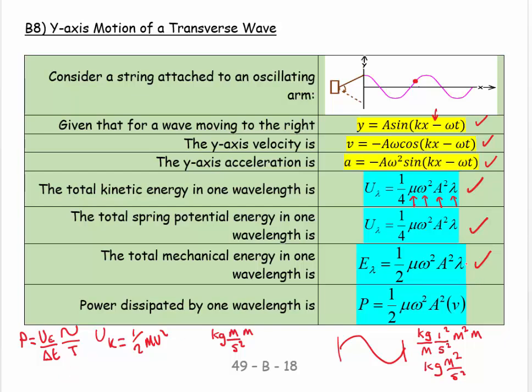So then that means that I get λ over T, meaning period, and λ over T is the velocity. So that gives you an insight. The faster that the wave is going, the more power is dissipated.